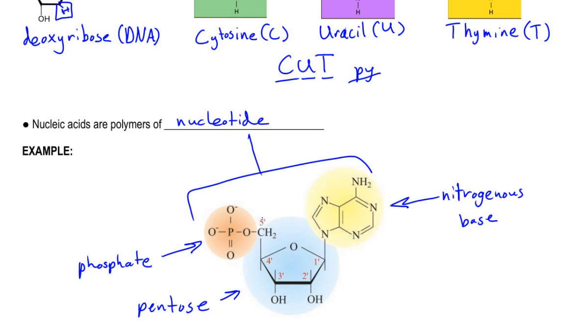Now, you might notice that there are some numbers above the carbons in the sugar. I'm only pointing this out because we're going to talk about it again in a minute. So, I want you to notice that the phosphate group is attached to what's called the 5' carbon. Don't worry about the naming convention. This is something that organic chemists use. But, I want you to know that the phosphate group is attached to the 5' carbon, and that it is this hydroxyl group at the 3' carbon. And, you'll see why this is important on the next page. So, let's turn the page.